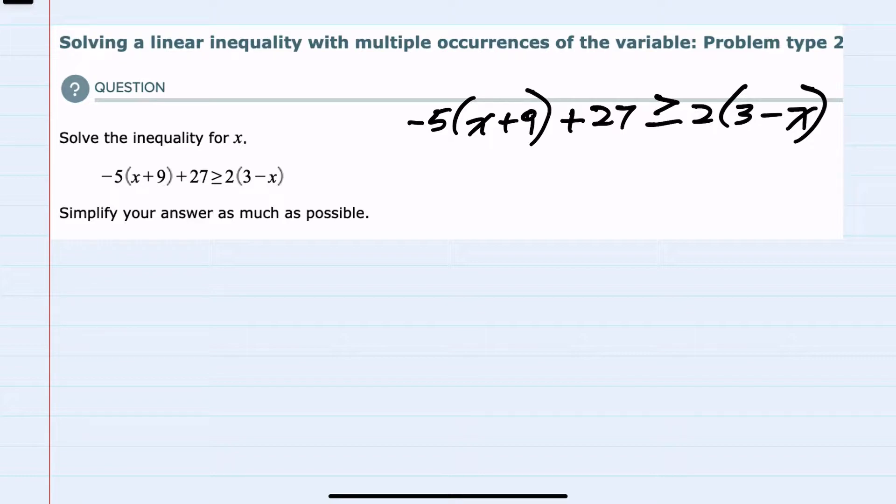To start with, on both the left and right hand sides, I can simplify by doing some distribution. Negative 5 times x is negative 5x. Negative 5 times 9 is negative 45. Bring down the plus 27.